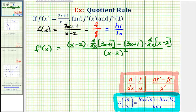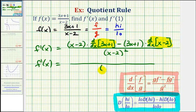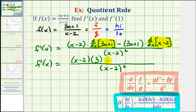Now we'll go back and find the derivatives and begin to simplify. So f prime of x is equal to: the denominator stays the same, and then we'll have the quantity x minus two times the derivative of three x plus one. The derivative of three x would just be three, and the derivative of one is zero, minus the quantity three x plus one times the derivative of x minus two. The derivative of x is one, and the derivative of negative two is zero, so we just have one. Now we'll distribute and combine like terms.